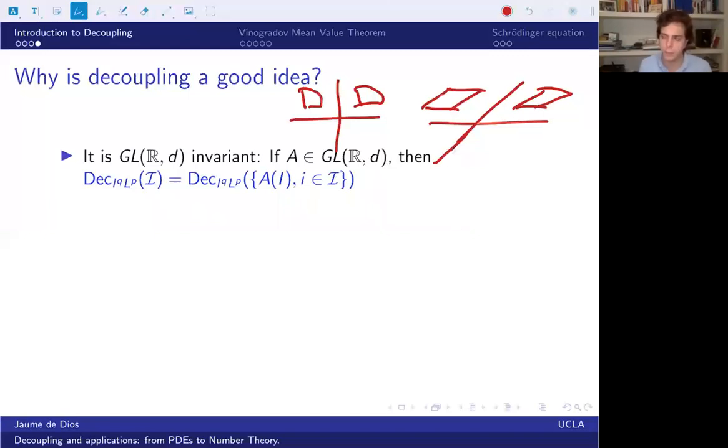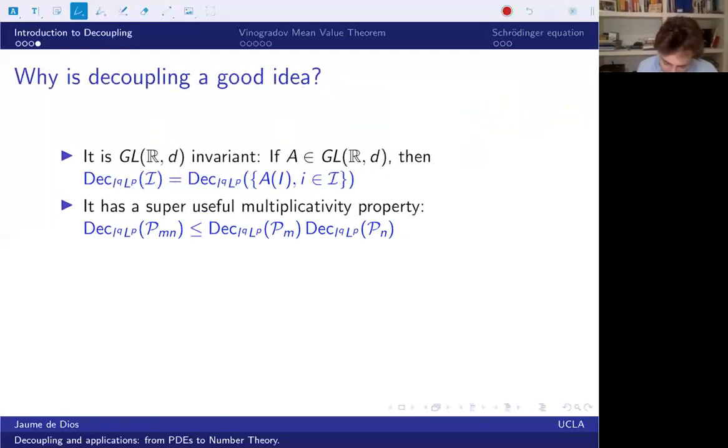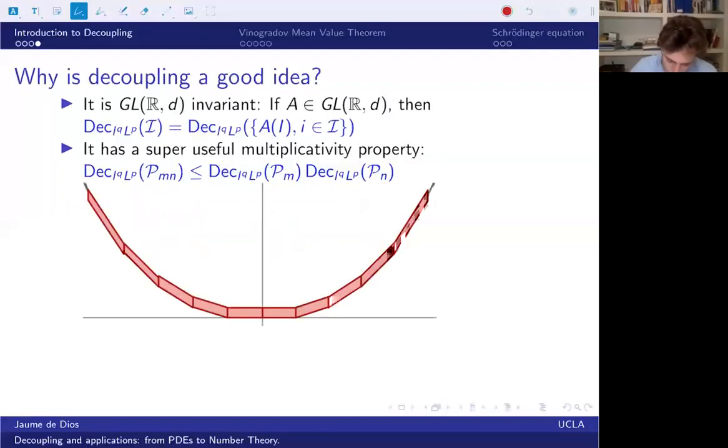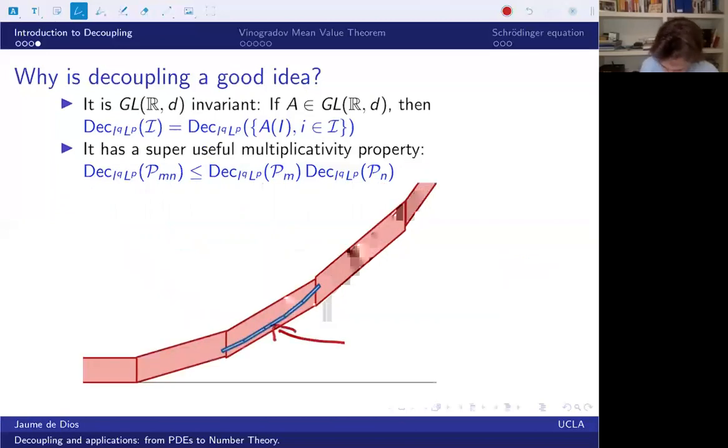And that's very important to simplify proofs. The proof has some sort of inductive setting all the time using some tool that's called induction on scales. That goes as follows. So if I know how to decouple the parabola with m little pieces, like just break the problem into m pieces and understand this inequality with m pieces. And I also know how to decouple it with n pieces. And why would such an estimate be true? You can just zoom in. So we start with our previous parabola. And let's say that this has m pieces. And then we just zoom in into one of the pieces and put n pieces inside.